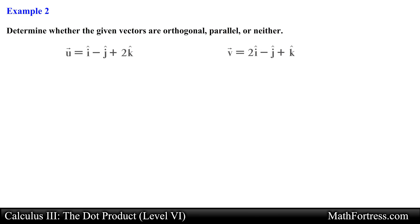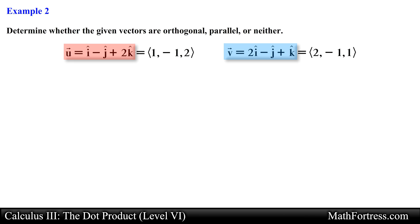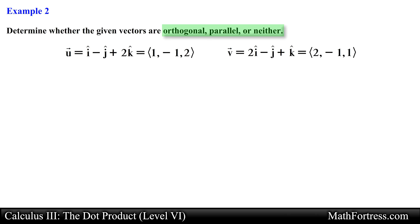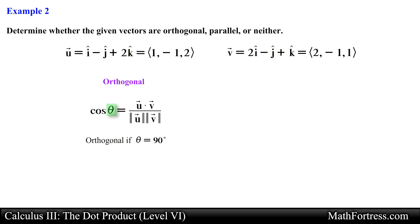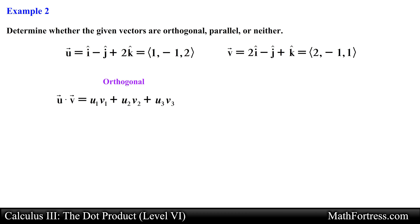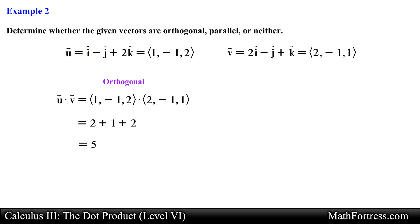Let's try the next example. Determine whether the given vectors are orthogonal, parallel, or neither. Here we have two vectors written in standard unit vector form. Let's rewrite them in component form. We can determine the relationship by systematically going through various tests. Let's first check if the vectors are orthogonal. We compute the dot product using the component definition and check if the result equals 0. In this case u dot v simplifies to 5, which is not equal to 0, so these two vectors are not orthogonal.